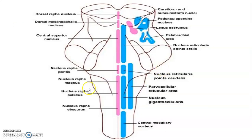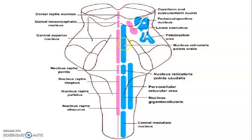This shows the median raphe zone, paramedian zone, and lateral zone, with the different nuclei such as reticularis pontis caudalis and reticularis pontis oralis of the paramedian.